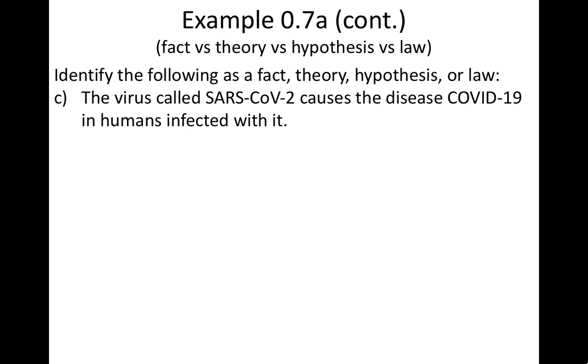In Part C, it states, the virus called SARS-CoV-2 causes the disease COVID-19 in humans infected with it. This is a theory. It's a theory because it offers an explanation that a virus is the cause of the disease. Again, you could even argue that this is a fact as well, in that it is the case that the coronavirus is the cause of the disease COVID. But it is a theory that has lots of evidence to support it, so it may be a theory as well as a fact.